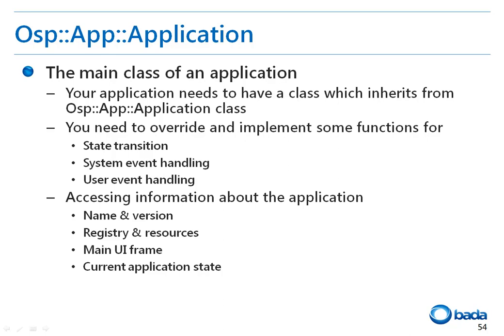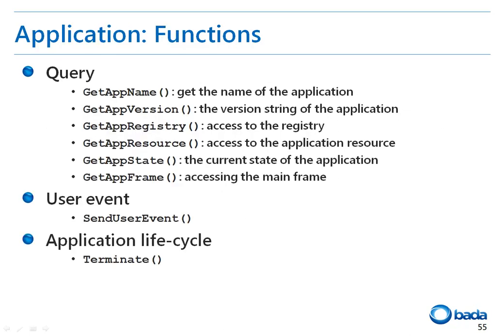Additionally, in the application class, functions are implemented to get the application name, the application version, the application registry information, the resources, the main UI frame, and the current application state. Let's have a look at the functions in the application class in more detail. The functions to get the application state or information are implemented, such as GetAppName, GetAppVersion, GetAppRegistry, GetAppResource, GetAppState, and GetAppFrame.